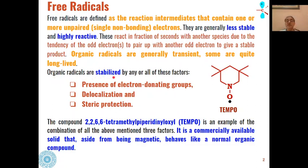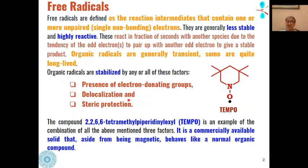The stabilization of organic radicals is determined by the presence of any or all of these factors: first, the presence of electron-donating groups will stabilize the free radical. For example, in TEMPO there are four methyl groups which are electron-releasing in nature and they stabilize the free radical. Second, the presence of delocalization — if the electron can be delocalized throughout the system, the free radical will become stable. Third, steric protection also leads to the stabilization of the organic radical.